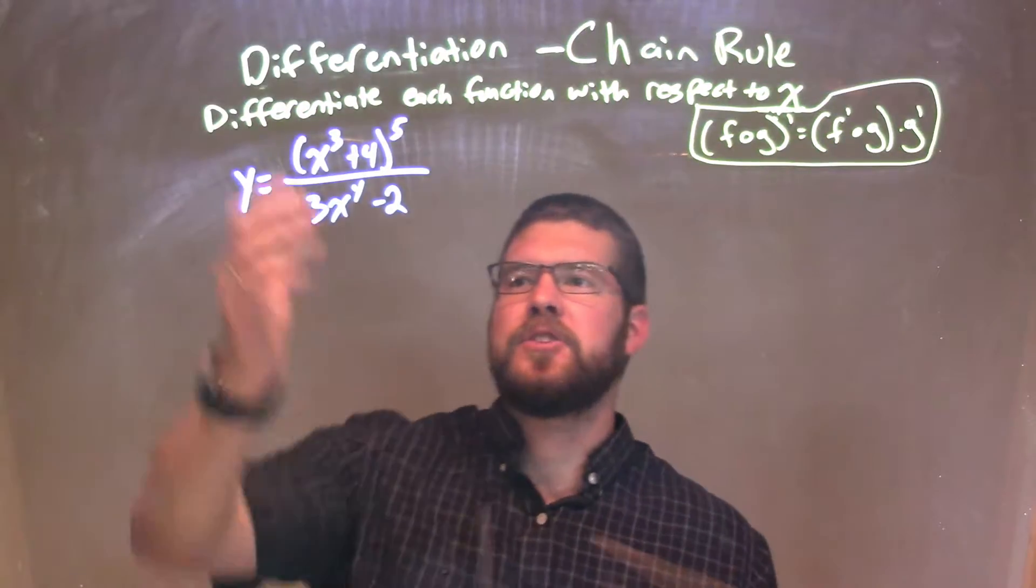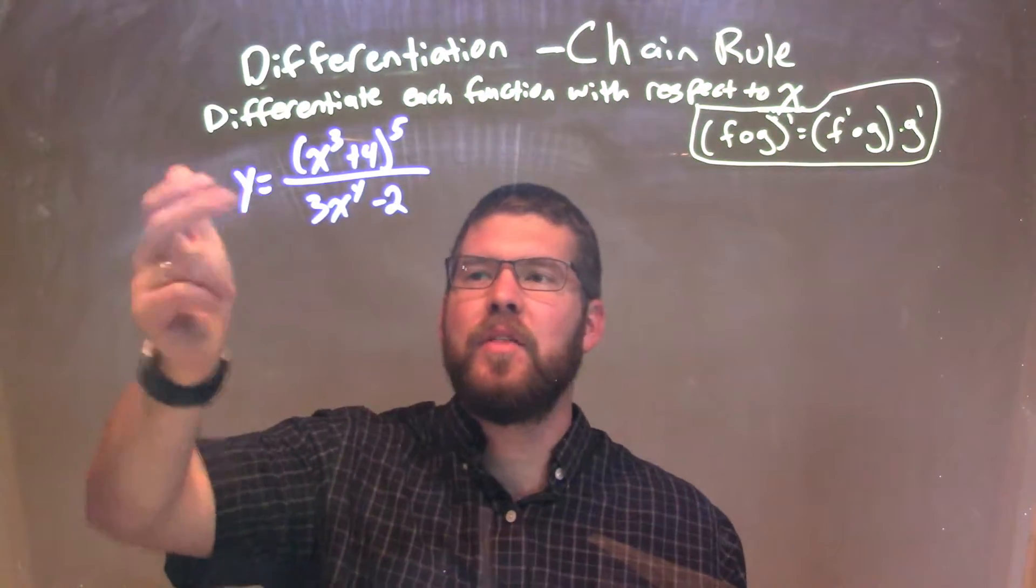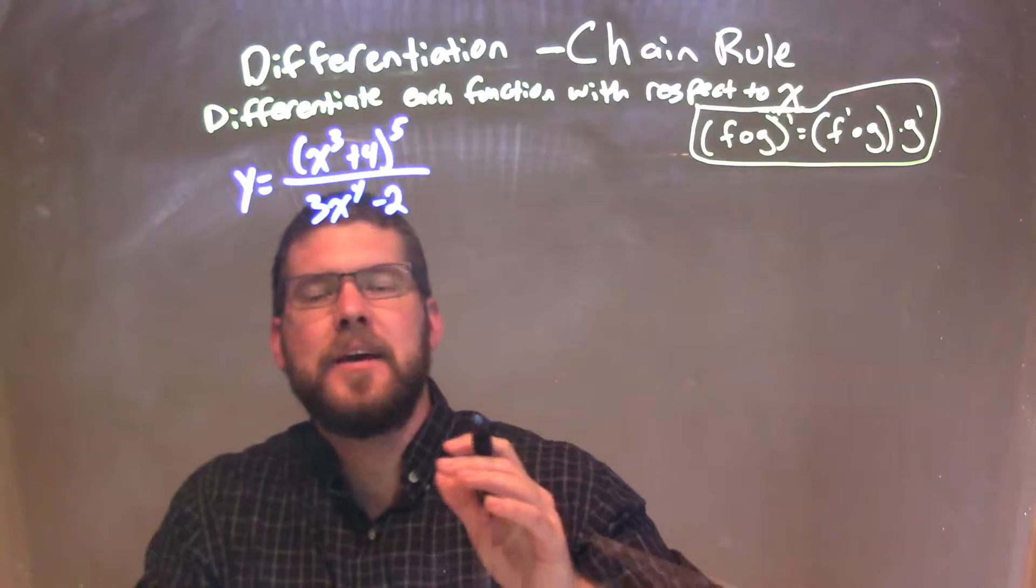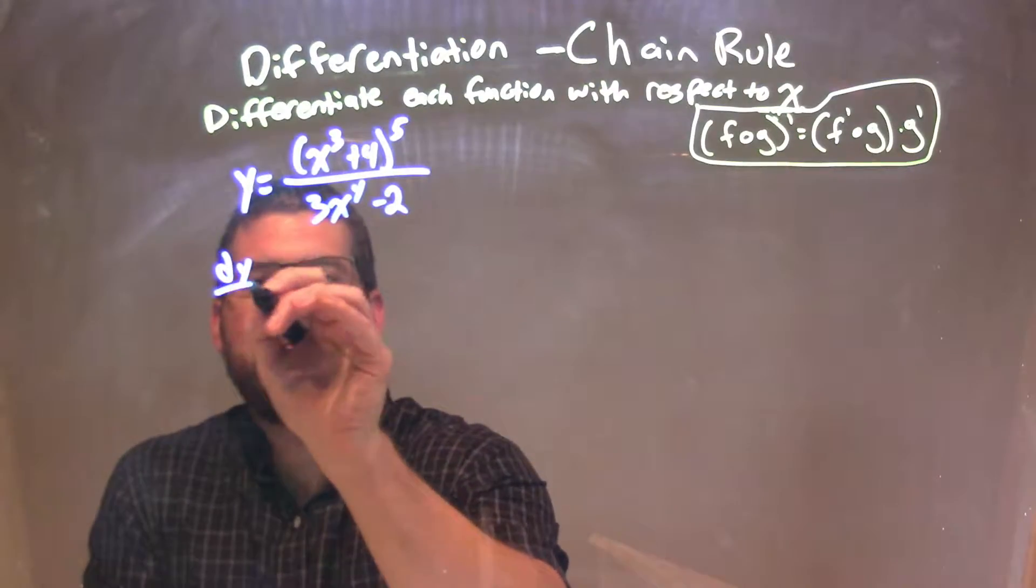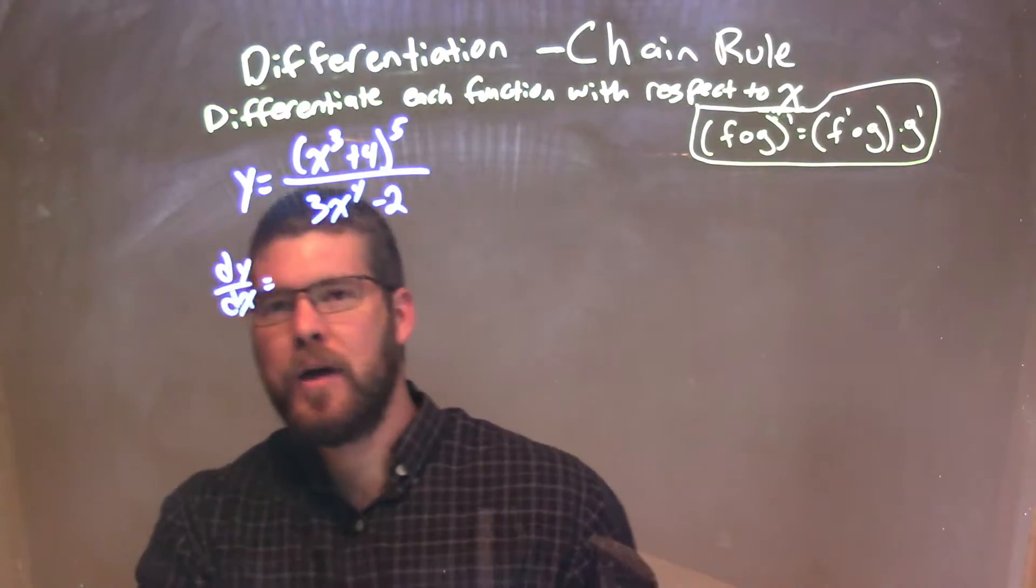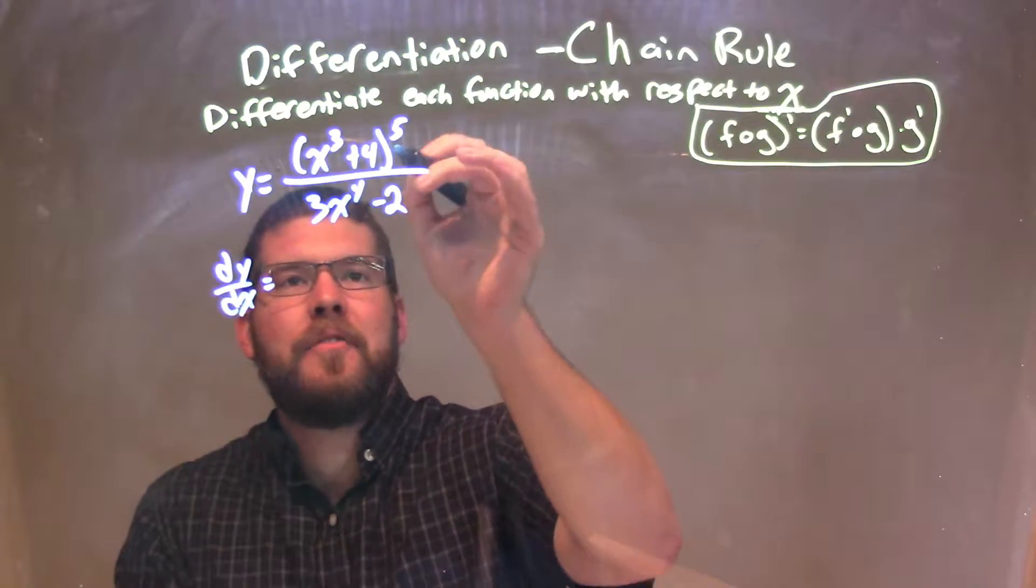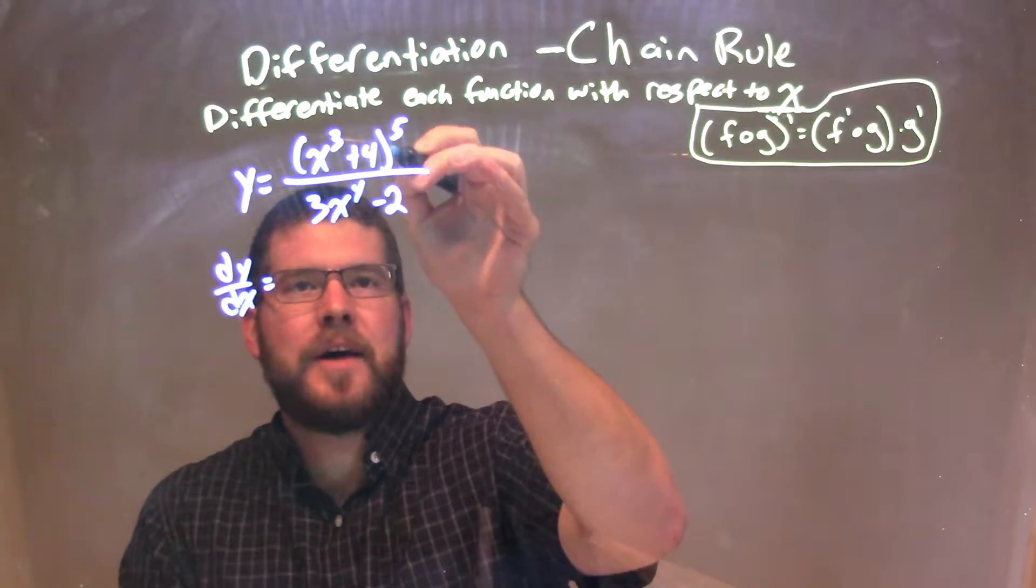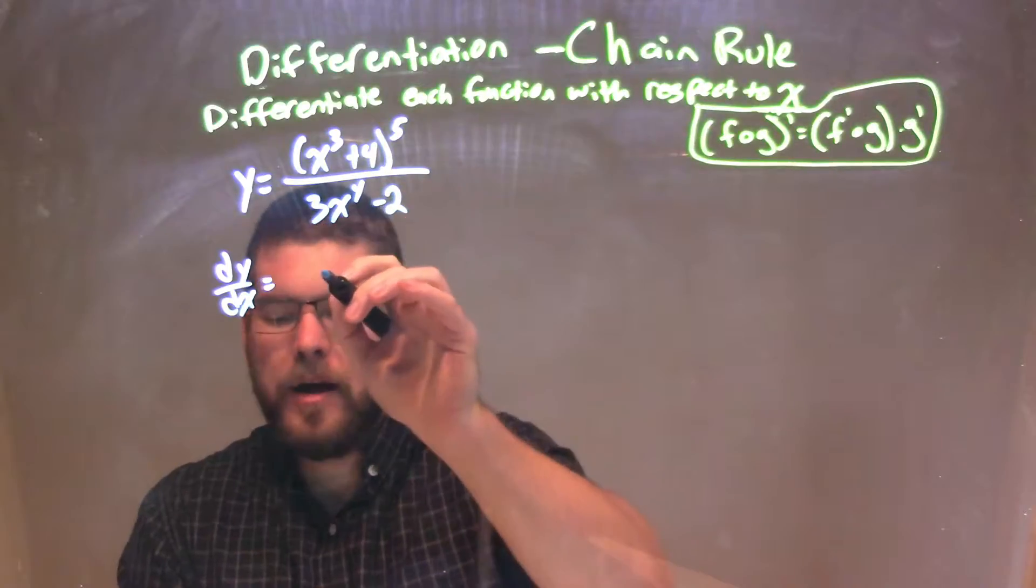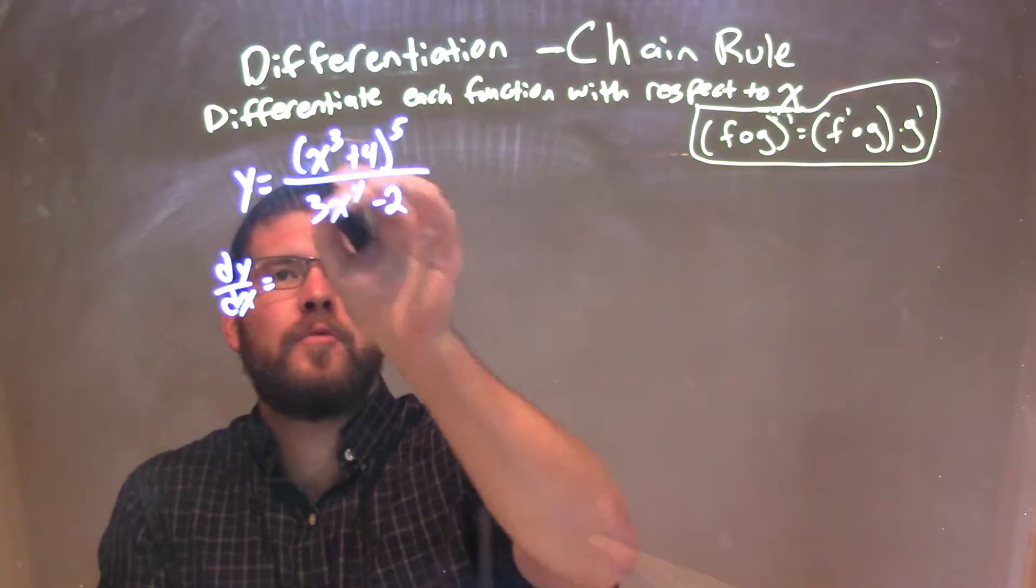So this one, I'm going to apply the chain rule as well as the quotient rule. So I take my derivative, my dy dx, and if you struggle with the quotient rule, I have other videos on that. I want to take my, I have this written as f and g, top and bottom. So f prime, I have f prime times g. f prime is the derivative of the top.